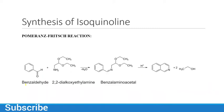Isoquinoline can also be prepared from benzaldehyde reacting with 2,2-diethoxyethylamine. An intermediate product is formed, which then gives the final product isoquinoline. So benzaldehyde reacts with 2,2-diethoxyethylamine to give benzylaminoacetaldehyde, and then the final product isoquinoline.